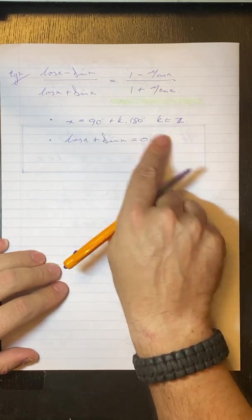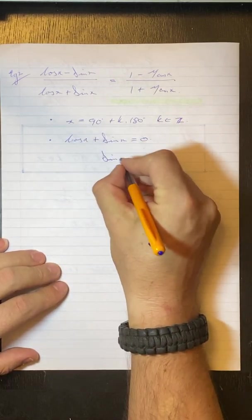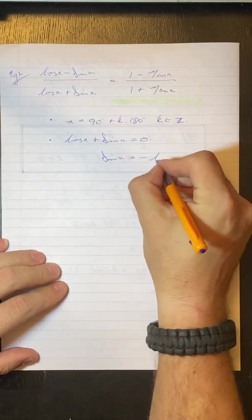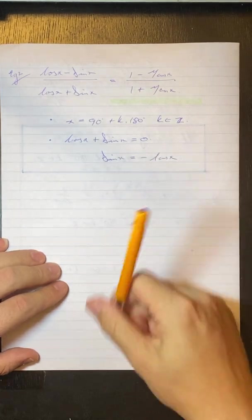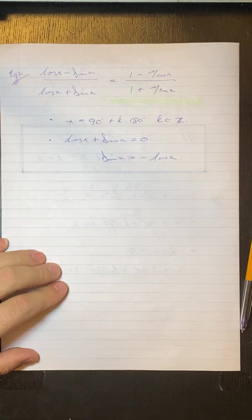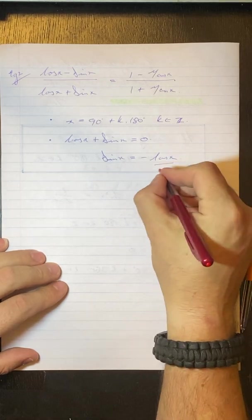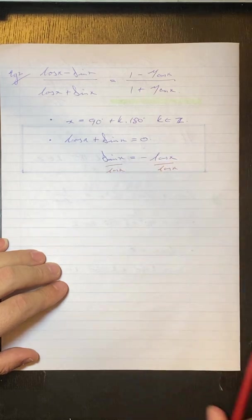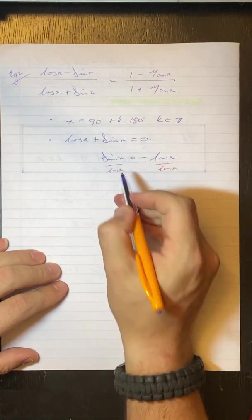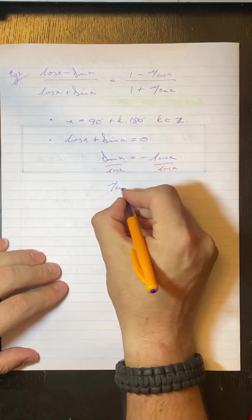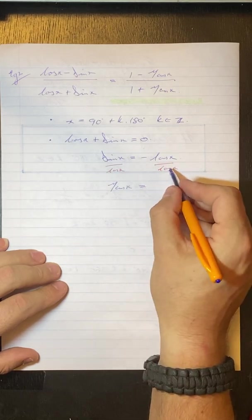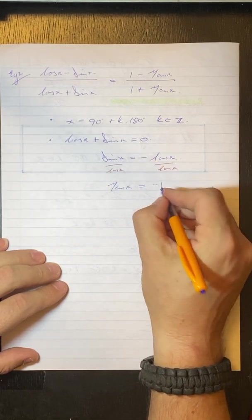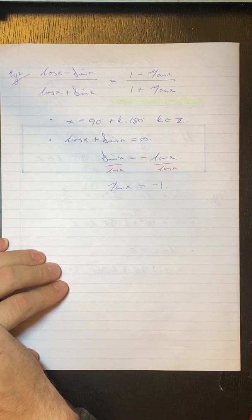So I'm going to take the cos x to the other side and we get sin x is equal to minus cos x. Divide both sides by cos x. Sine over cos is tan x equals cos x divided by cos x is 1, and we have minus 1 there.